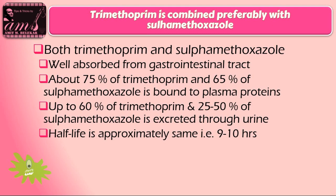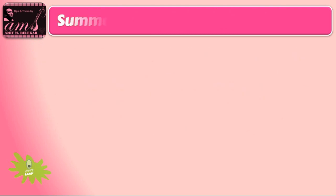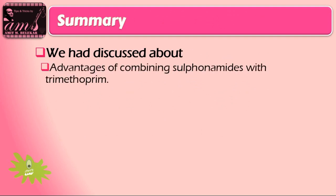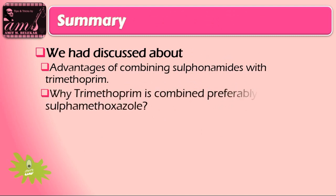Thus, these two drugs can be combined, and preferably sulfamethoxazole is combined with trimethoprim because of these pharmacokinetic similarities. In this video, we discussed the advantages of combining sulfonamides with trimethoprim, and also why trimethoprim is combined preferably with sulfamethoxazole.